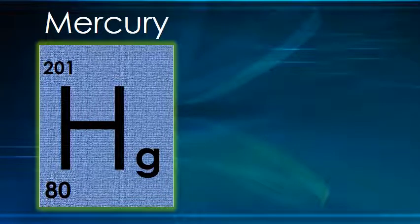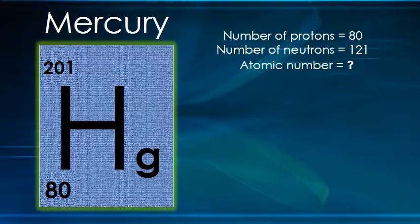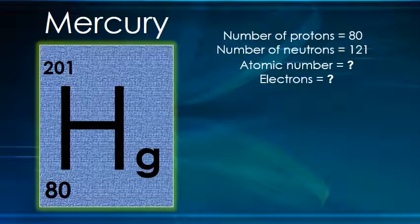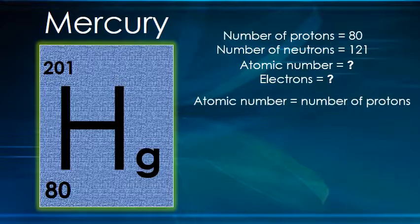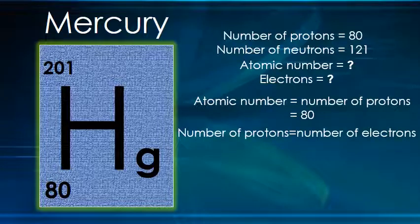Mercury is another element which has 80 protons and 121 neutrons. The atomic number is equal to the number of protons, so the atomic number will be 80. Since the number of protons equals the number of electrons, mercury also has 80 electrons.